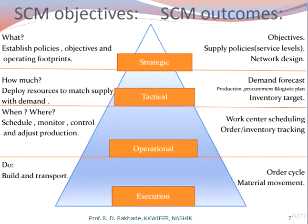Supply chain management has certain objectives and outcomes, organized into four stages or levels. The first is the strategic level, which involves establishing policy objectives and operating footprint related to facilities, inventory, transportation, information, sourcing, and pricing of products. The outcome at this level includes supply policies, service levels, and network design.